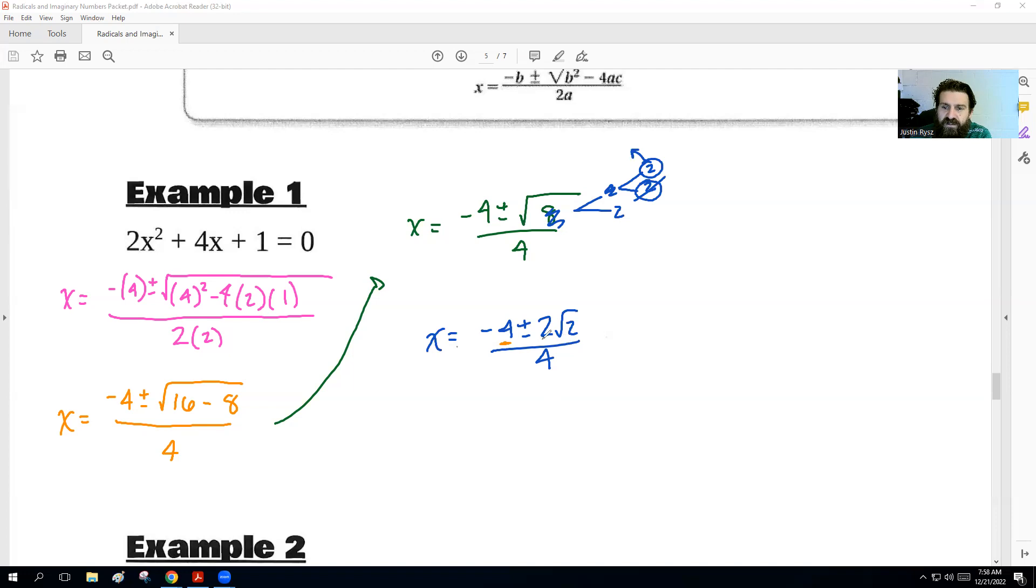And to reduce, we look on the numbers that are not inside of the square root. And we're going to see if we can divide all of those numbers by the same thing. So can we divide negative 4, 2, and 4 by the same thing? Yeah, we can actually divide them all by 2. And so if we do that, we get a negative 2 plus or minus 1 radical 2 over 2. We only do the numbers outside of the square root. We do not change the number inside. And then if you want to get real fancy, if you have 1 radical 2, you could just call that radical 2. And that is the exact solution.